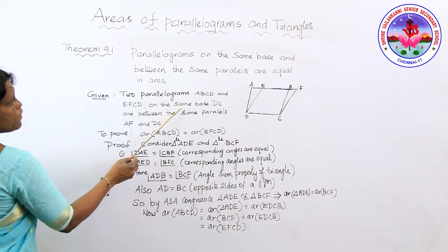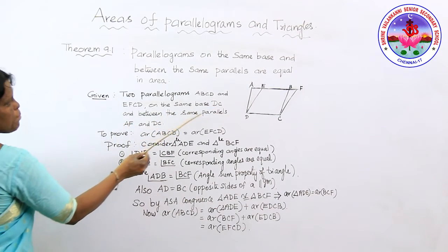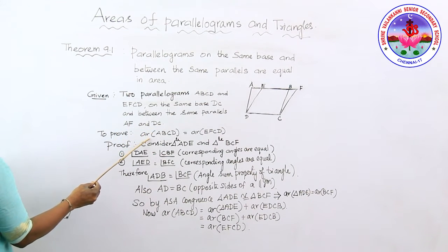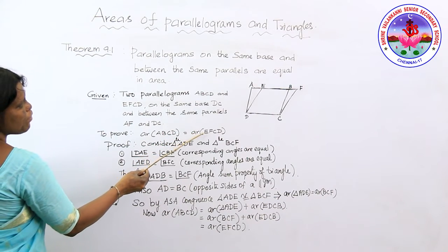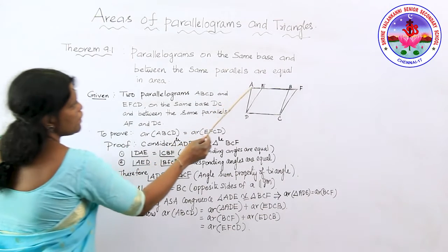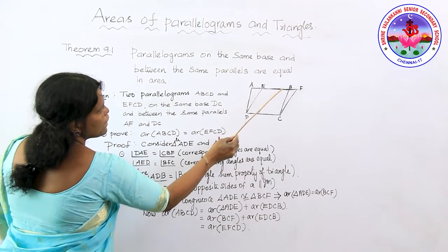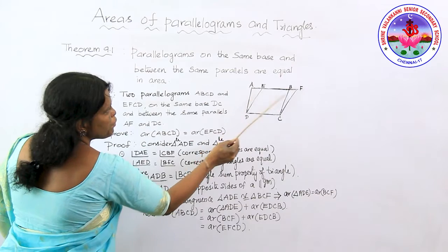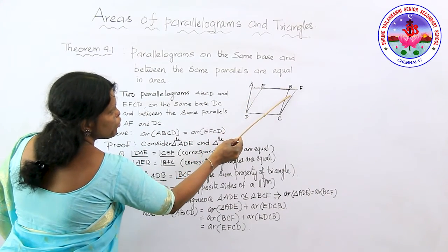Parallelograms ABCD and EFCD are on the same base DC and between the same parallels AF and DC. We need to prove that area of parallelogram ABCD equals area of parallelogram EFCD. In order to prove those areas are equal, we first need to show that certain triangle areas are equal by proving the congruence of both triangles.